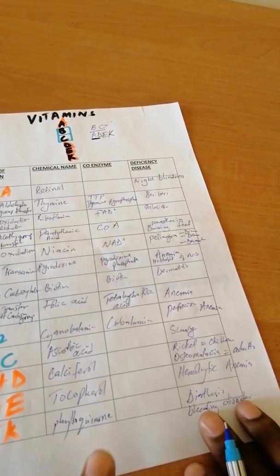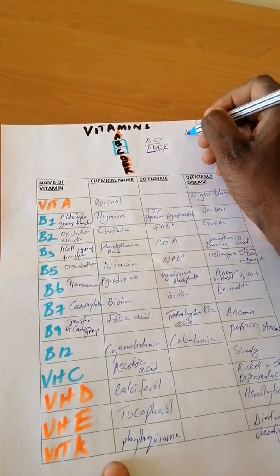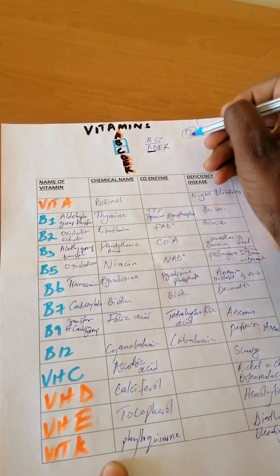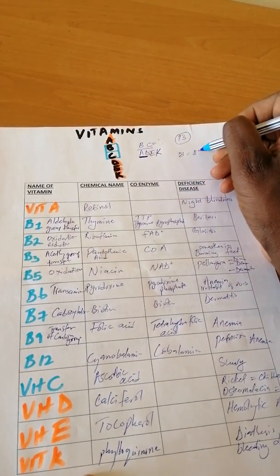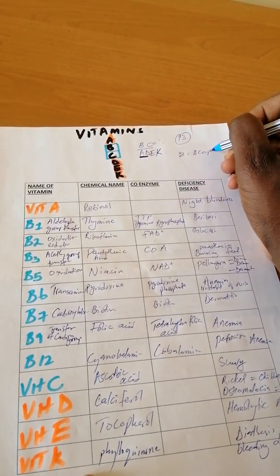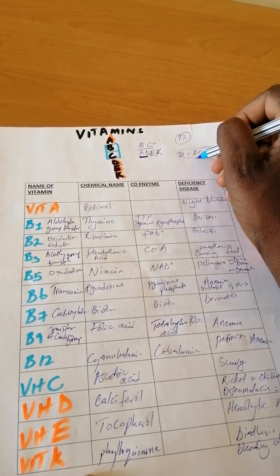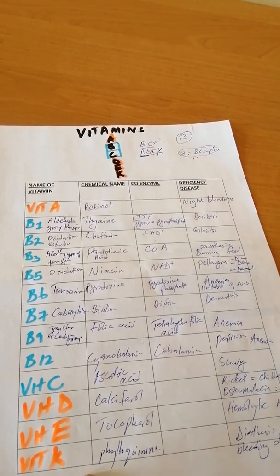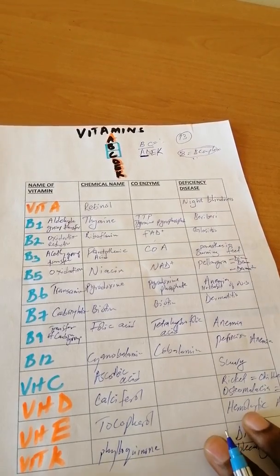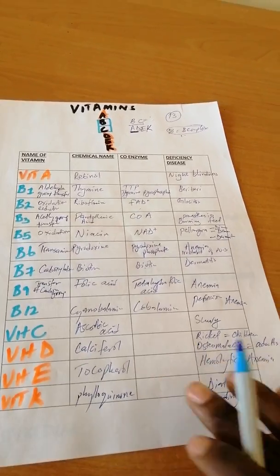So in short, we have 13 vitamins. We have 8 B-complex vitamins, and the B-complex vitamins have coenzymes with specific functions. And that's it for today — thank you very much.